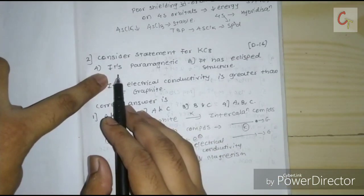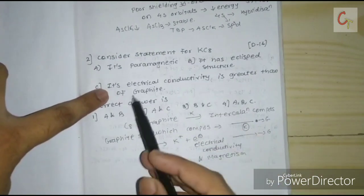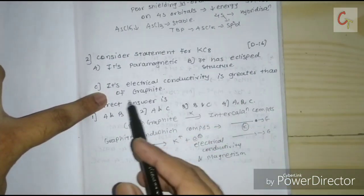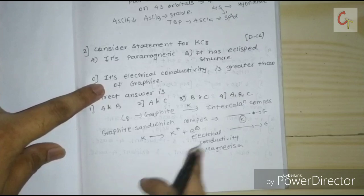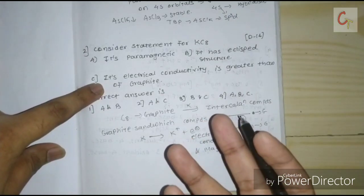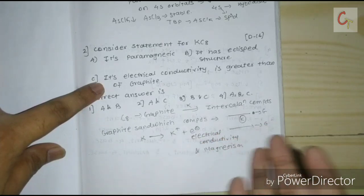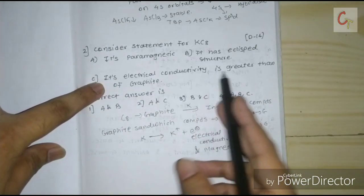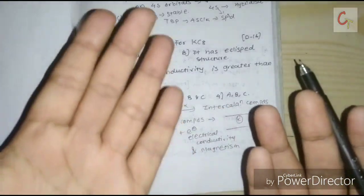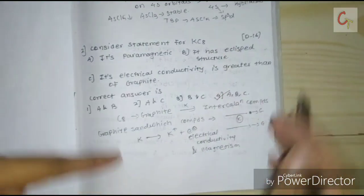C8K is paramagnetic due to the presence of the unpaired electron donated by potassium. The third statement — electrical conductivity greater than graphite — is correct because potassium donates an unpaired electron, which enhances conduction. It also has an eclipsed structure where layers align on top of each other. Therefore, all three statements are correct, and the correct answer is option A.